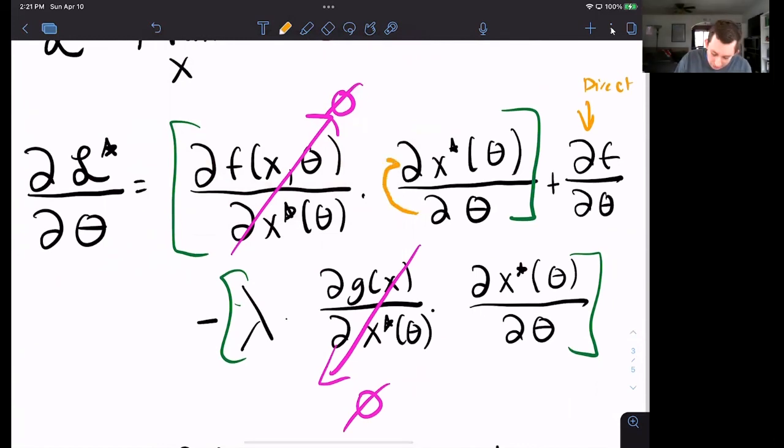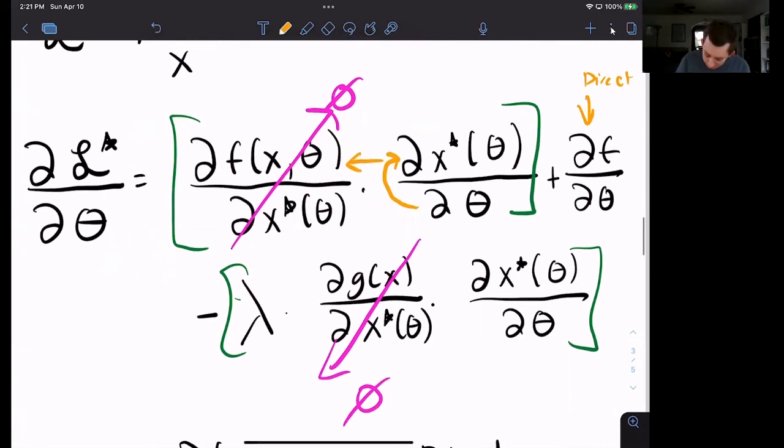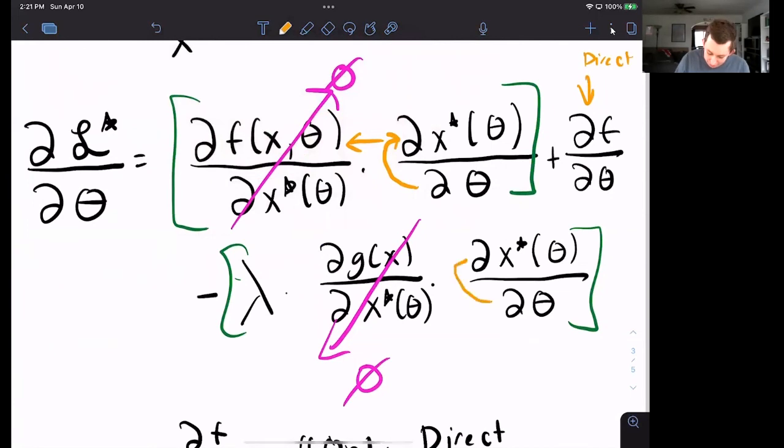we can see that this right here is a direct effect of theta on f. This part in here is indirect because theta affects x star, and x star then affects f, which we don't care about. That's why we have this zero. Same thing here.